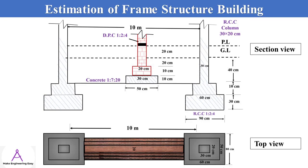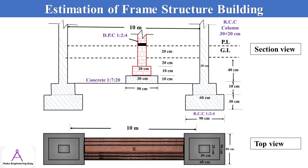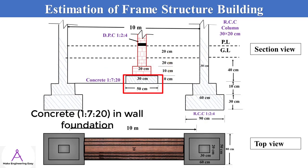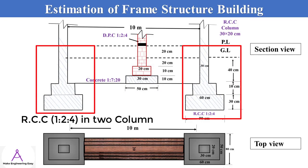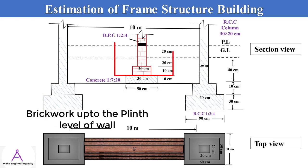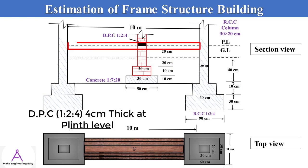Hi, my name is Engineer Shahzad Khan. In today's video I will discuss the quantity estimation of a frame structure building. A wall is to be built between two columns. The quantities to be estimated include excavation for two columns and wall, concrete 1:7:20 under the brickwork of wall, RCC 1:2:4, two columns up to plinth level, brickwork up to plinth level, and DPC 1:2:4 four centimeter thick on the wall plinth level.